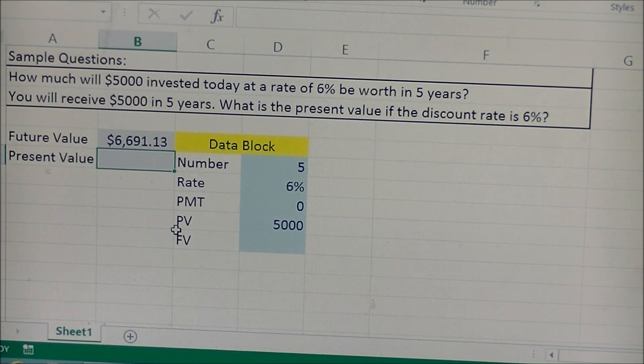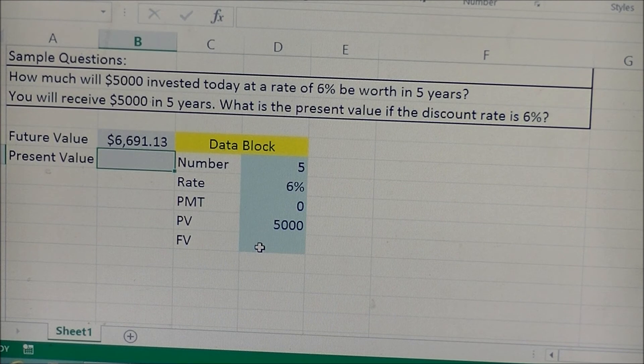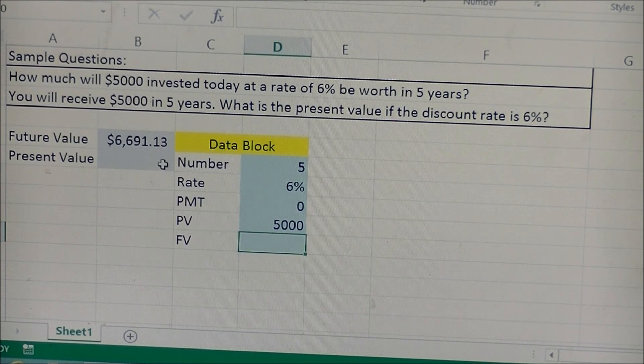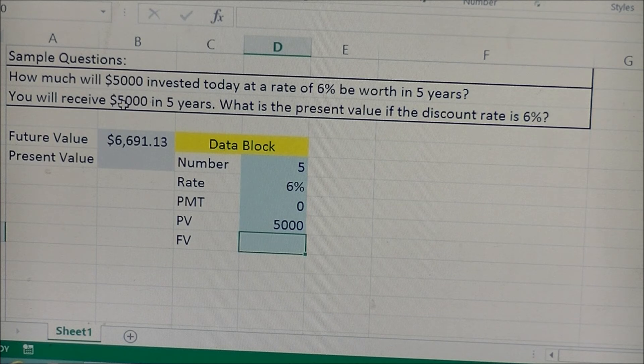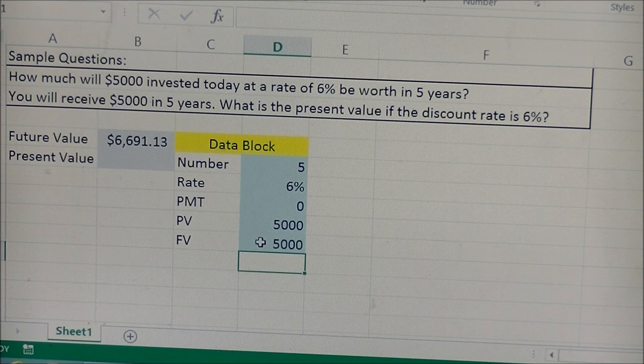And then for the present value, the only thing we're going to change or add to is the future value. So they're telling us the future value is going to be $5,000. We're getting $5,000 in five years, so we'll type in 5,000.